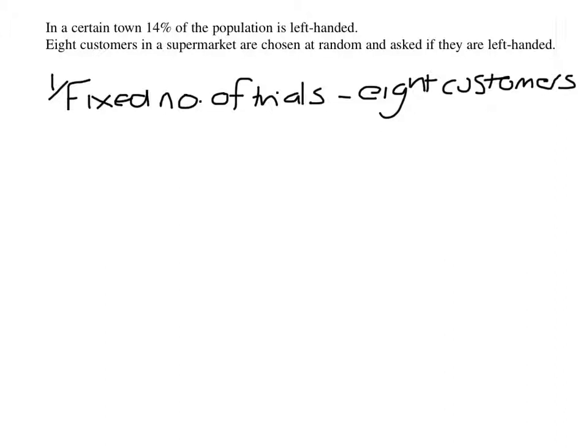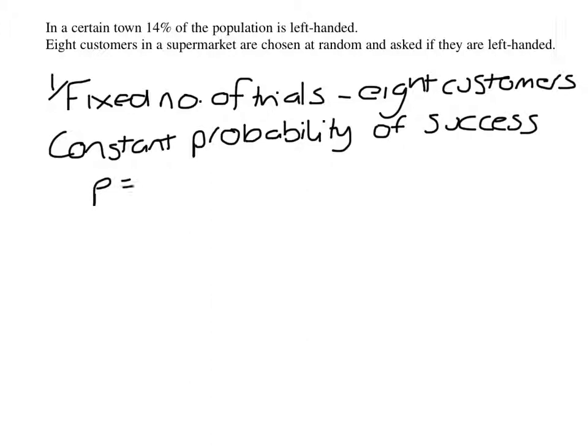The second reason I am going to use is we have a constant probability of success, and that is P. The probability of being left handed is always 0.14.